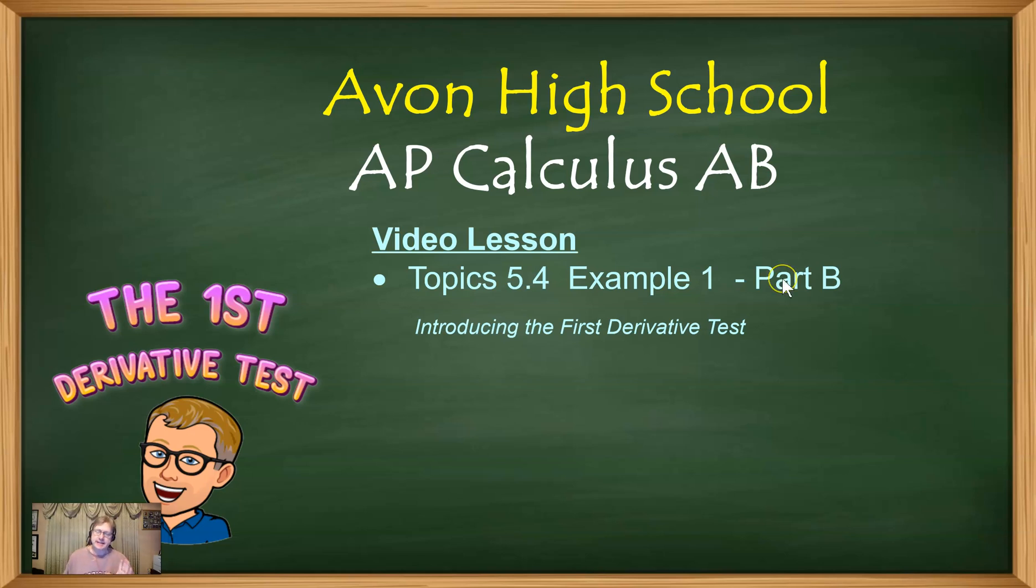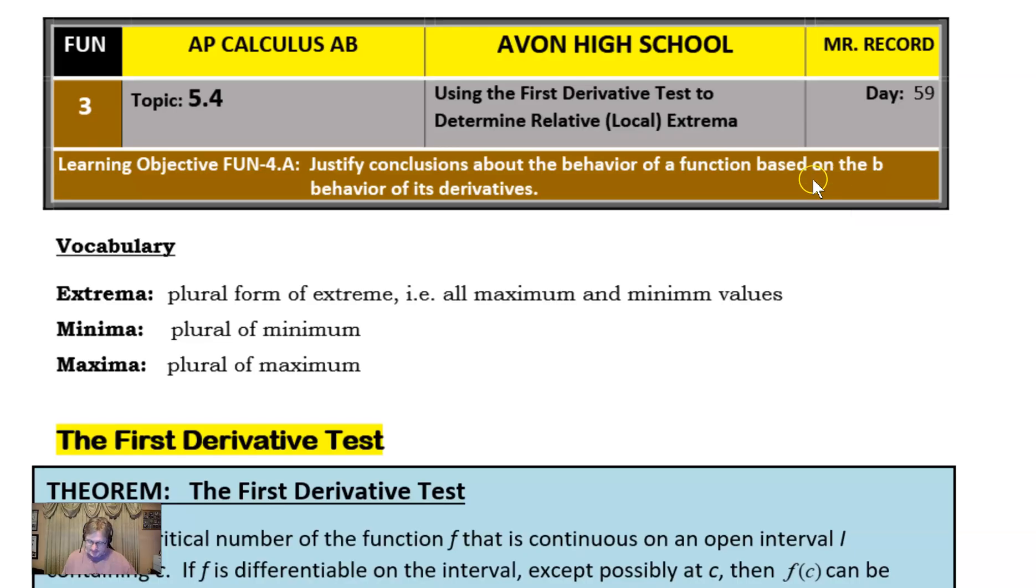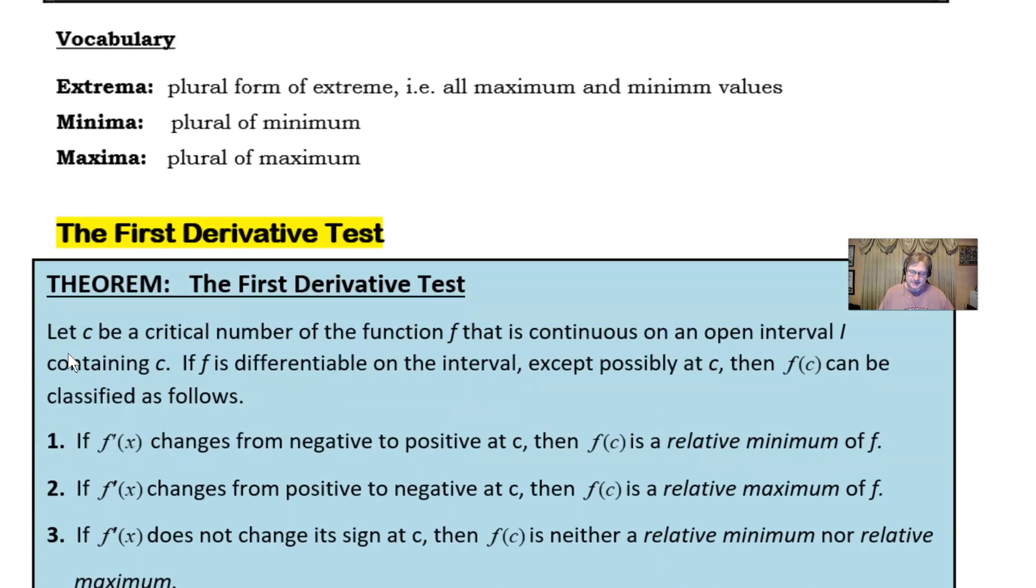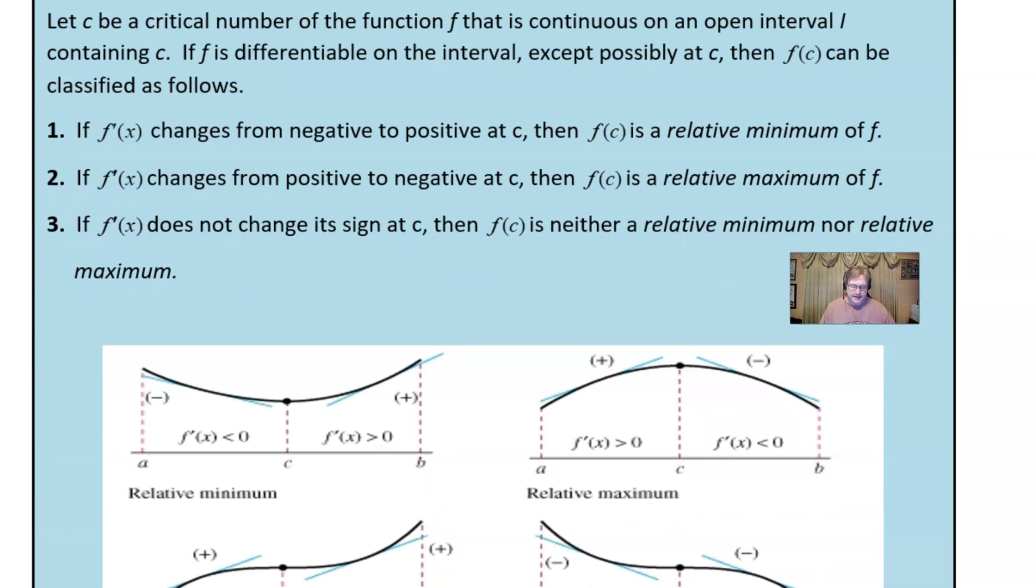We're going to look at our second example, which is really example one part B. If you remember anything about part A's example, we talked about vocabulary: extrema, minima, and maxima, and we introduced the underpinnings of this lesson about using the first derivative test. If a derivative changes its sign from negative to positive, the point at which that change occurs is a relative minimum. Likewise, if the derivative changes from positive to negative, we have a relative maximum.